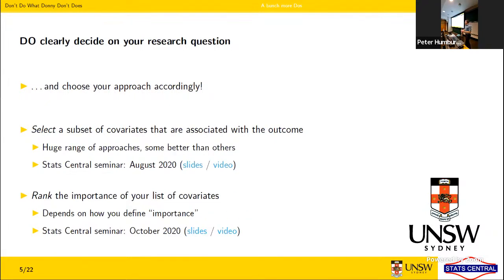Another reason for a multivariable model is to predict outcomes for a new subject, such as computing propensity scores for further analysis — where interpretability is less important and complex machine learning methods can be considered. You might also want to select a subset of covariates associated with the outcome; there's a massive range of approaches there. Our August 2020 seminar covers variable selection. You might also want to rank the importance of covariates — that depends on how you define importance, covered in our October 2020 seminar.